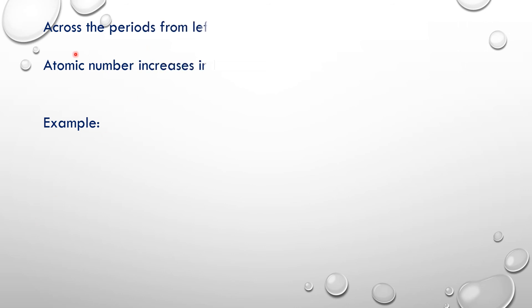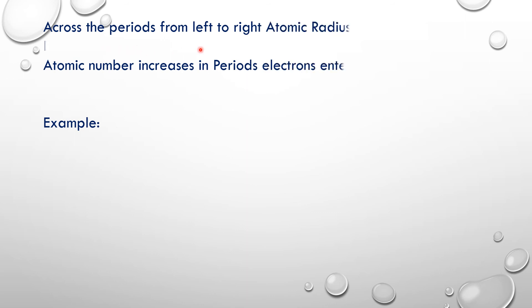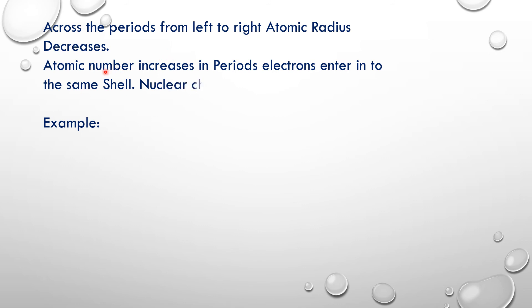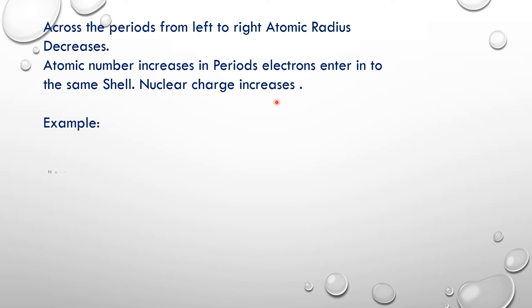Let us discuss how the atomic radius changes across the periods. Across the period from left to right, the atomic radius decreases. Why? The atomic number increases in periods, but the new electron enters into the same shell. So the nuclear charge increases, meaning the number of protons increases and they pull the electrons towards the nucleus.